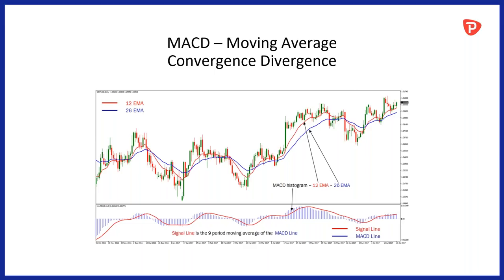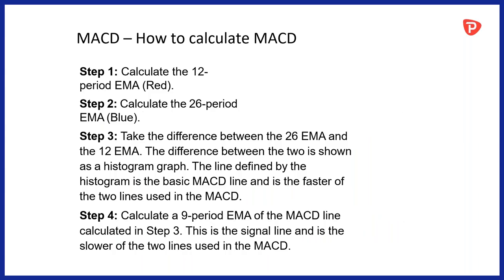MACD is one of those indicators used on all timeframes — from scalping strategies on the 15-minute and one-hour timeframes to weekly and daily timeframes. Daily MACD crossing above and below zero is something put out in a lot of big investment banks' reports, like UBS. We also get asked a lot whether we should change the 12-26 settings — my answer is always no. You shouldn't reinvent the wheel; just follow what the big players in the market are doing. Leave it at 12-26.